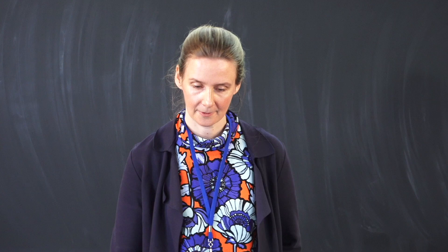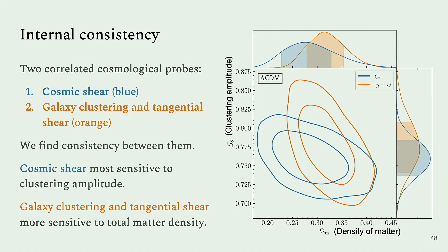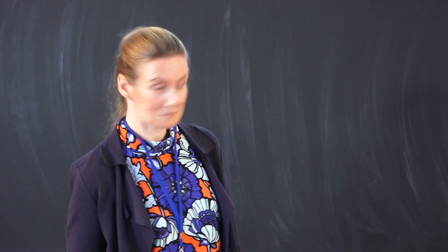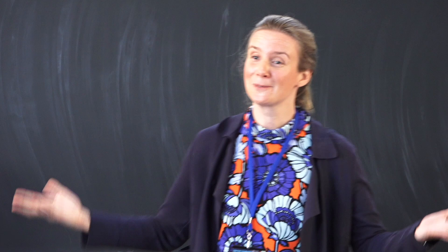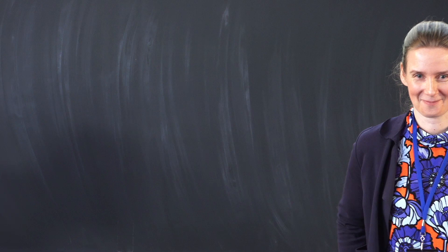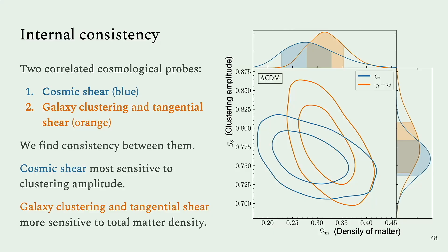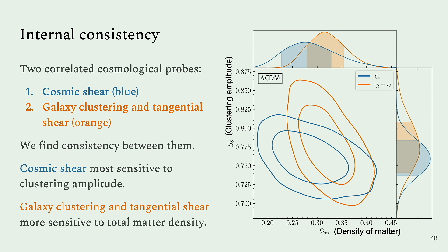For the results: we split the data into cosmic shear and galaxy clustering and tangential shear. We found consistent cosmology from cosmic shear and galaxy-galaxy lensing, so based on the good agreement of these two contours — both in this 2D projection and in the full more-than-30-dimensional model space — we can combine and get our fiducial DES 3×2-point result. We also obtained constraints on S8. Rather than the numbers, let me conclude.